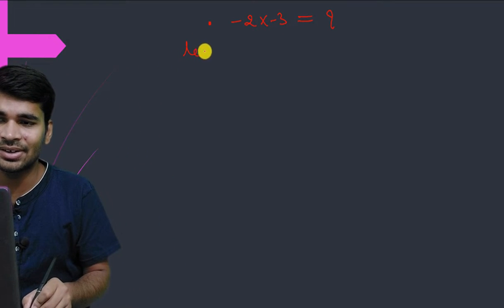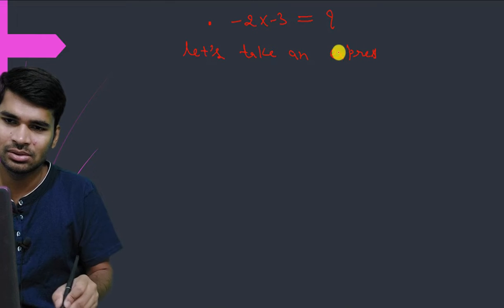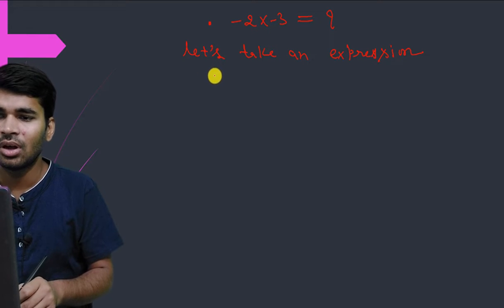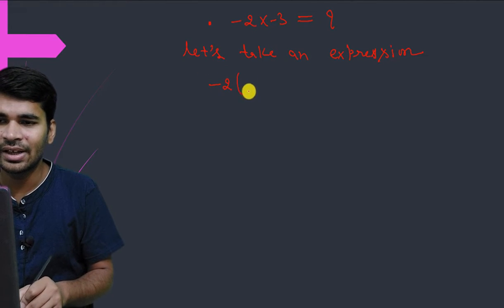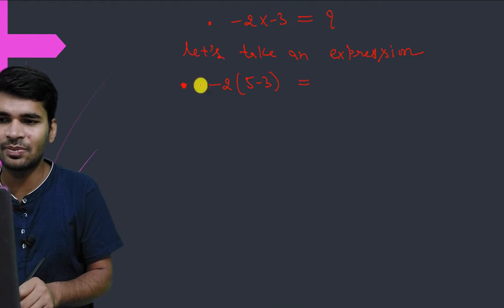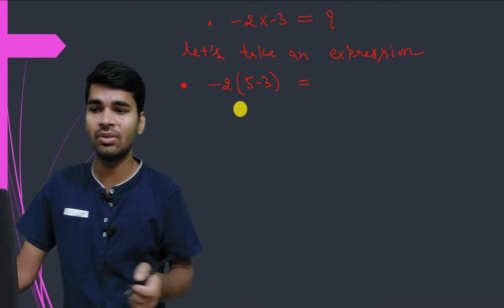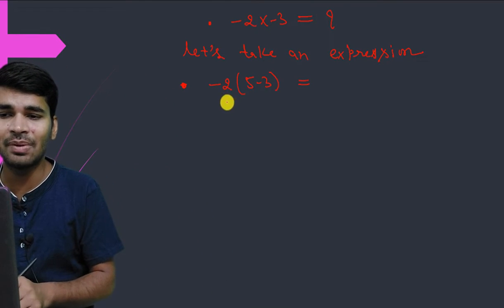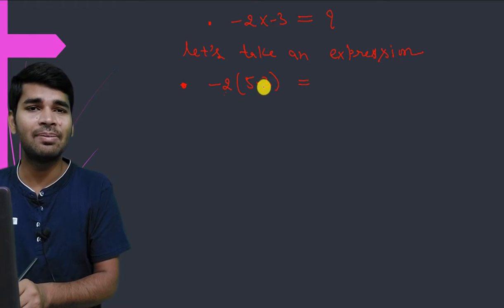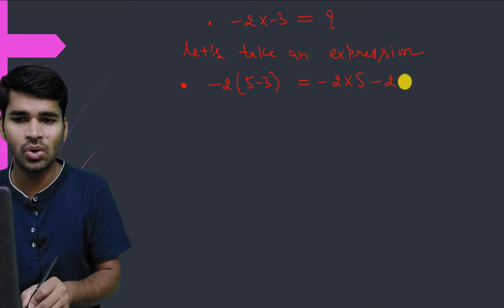Let's take the expression (-2) times (5 - 3). We can evaluate this with the help of the distributive law. Distributive law says that (-2) will be multiplied by 5 and also by (-3), giving us: (-2) times 5 plus (-2) times (-3).